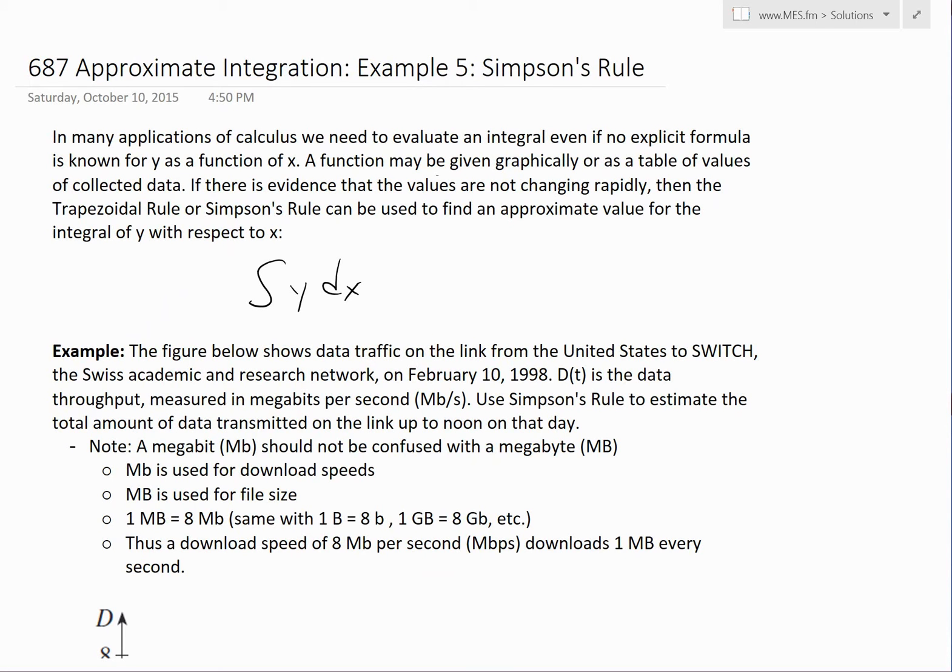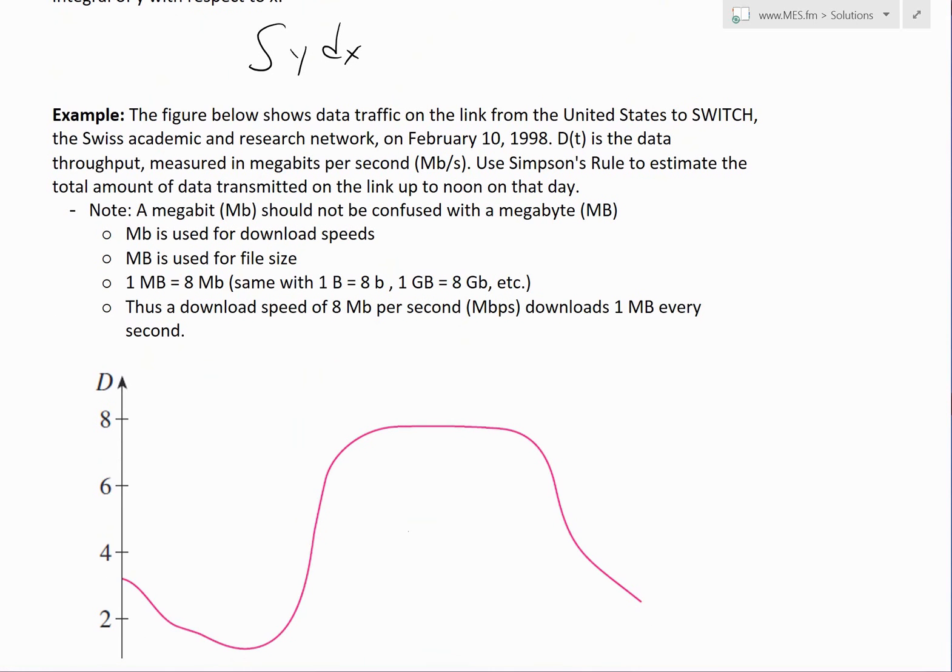Basically in many applications of calculus, we need to evaluate an integral even if no explicit formula is known for y as a function of x. A function may be given graphically or as a table of values or collected data. If there's evidence that the values are not changing rapidly, then we could apply the trapezoidal or Simpson's rule to find an approximate value of the integral of y with respect to x. So basically now let's look at this type of example.